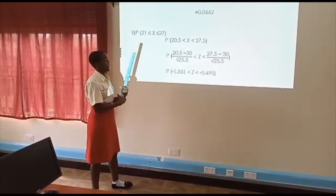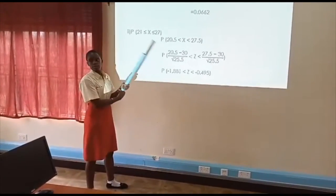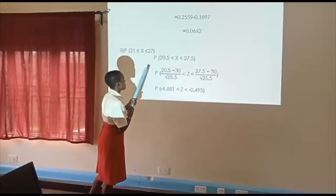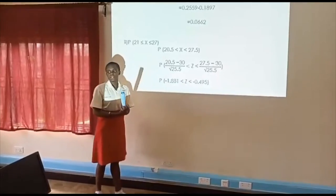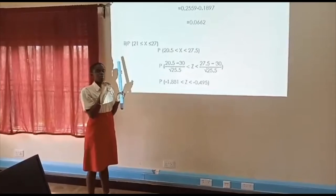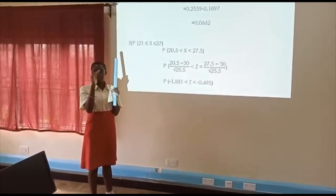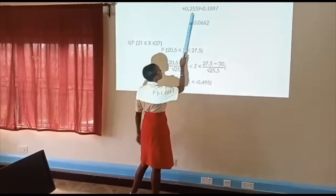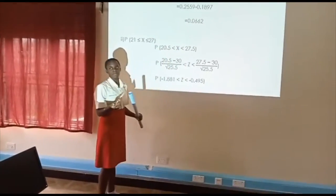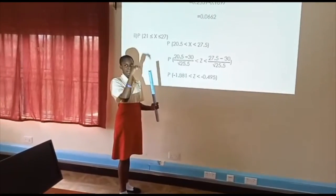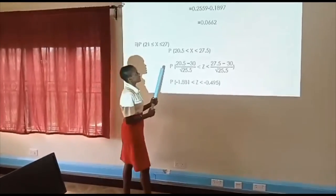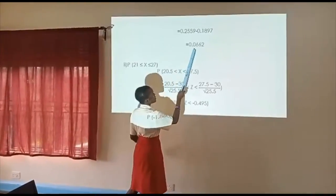When we are reading from our log books or our four figure books, if we are reading 0.693, we read 0.6 under 3. We move on to the additional table, what's under 3 we add to get 0.2559. Then we subtract. When we are reading from 0.495, we look for 0.4 under 9. We get that value and add from our additional tables what's under 5. Then we get our answer as 0.0662.